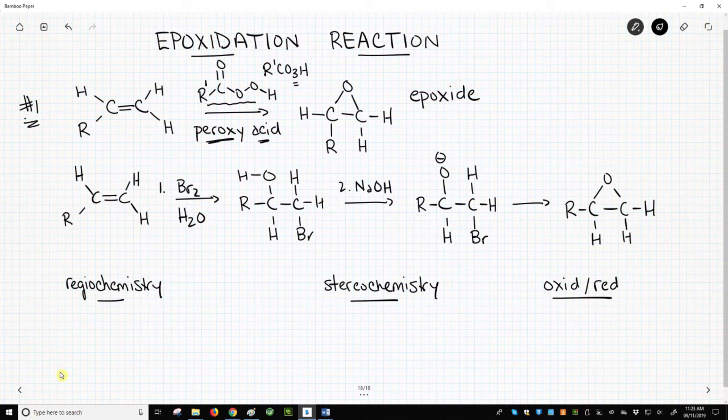The R prime group can be just about anything. I'll normally use CH3, but there are many different peroxyacids. Peroxyacids react with alkenes to form an interesting product called an epoxide.